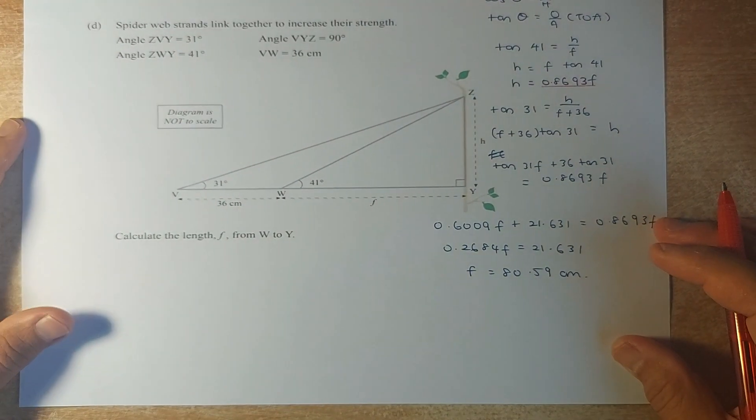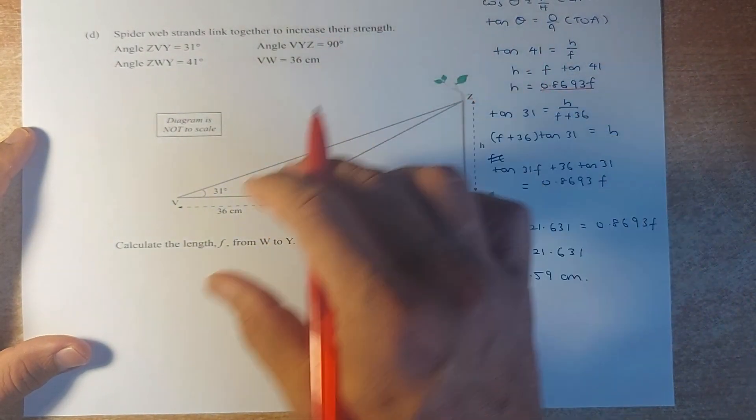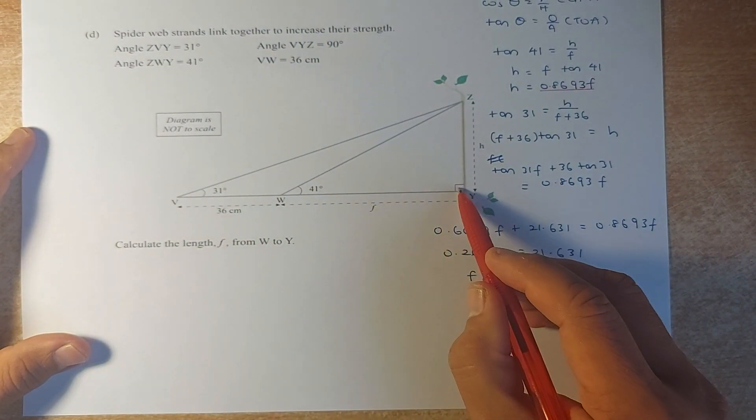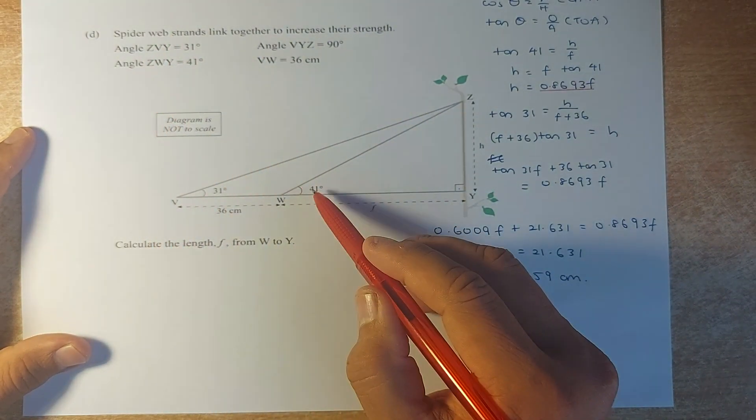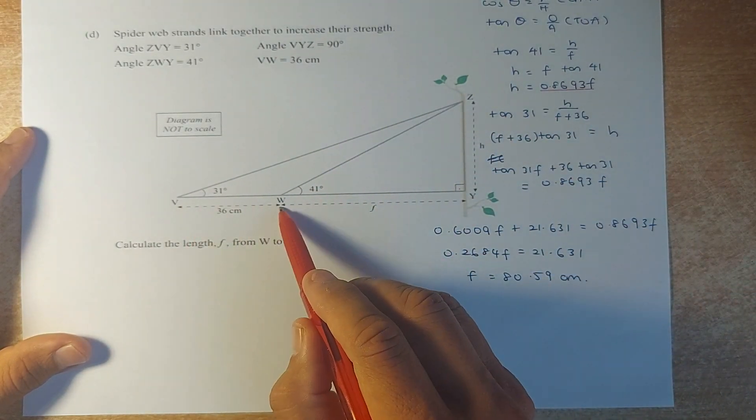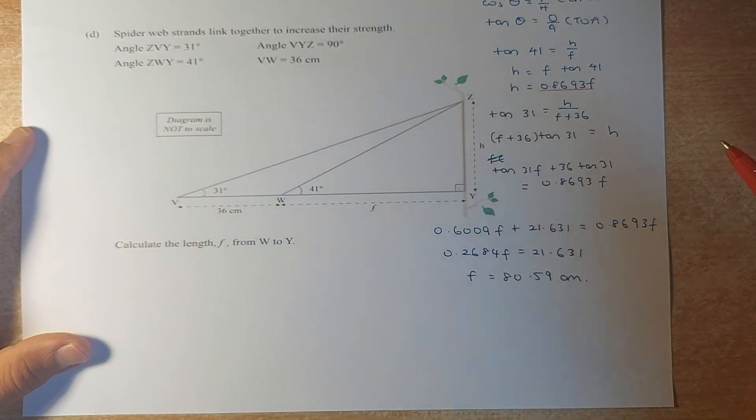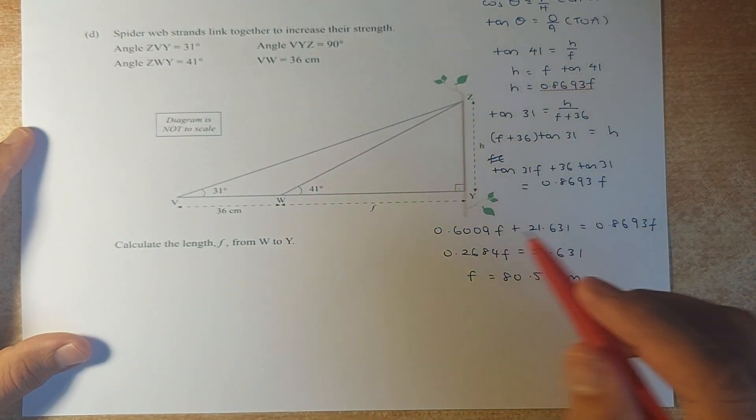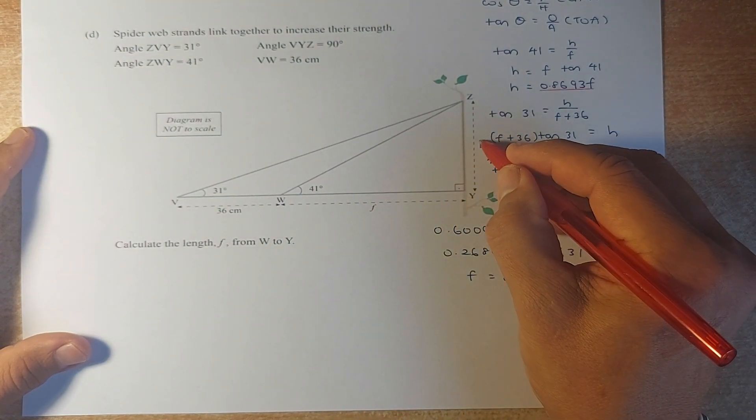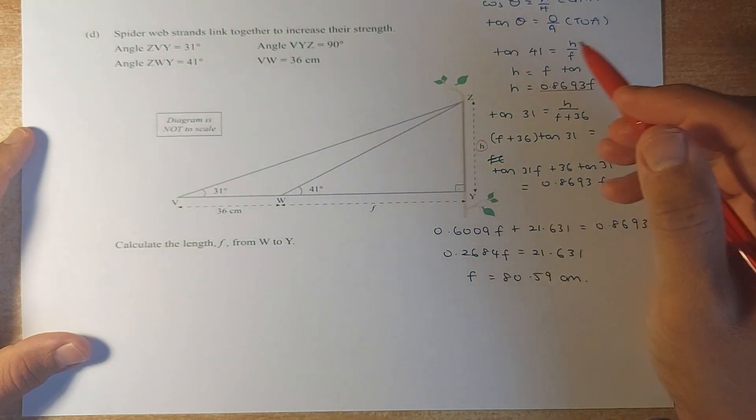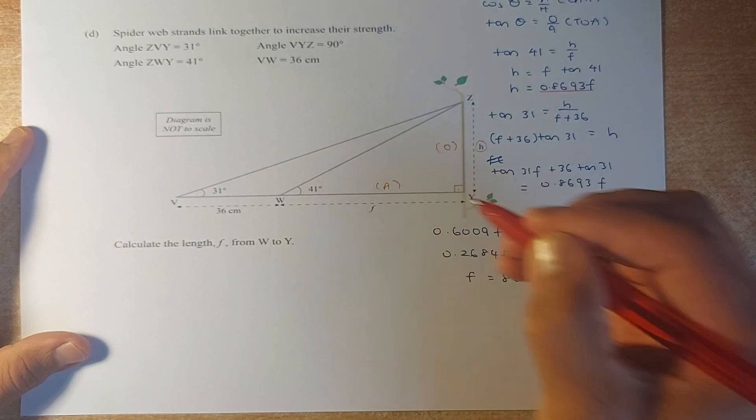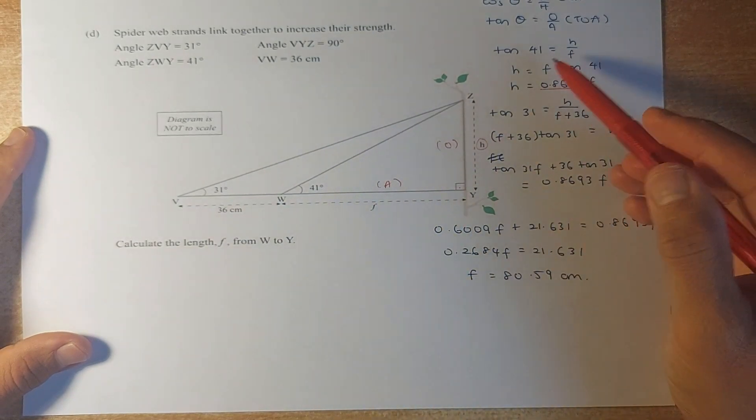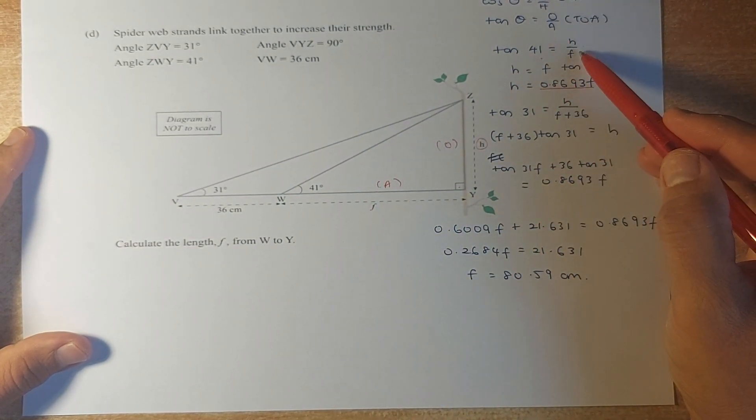The last question is the excellence question. Involves a bit of algebra. These are two right-angle triangles. This angle is 90. Angle ZVY is 31. Angle ZWY is 41. And you know that this is 36, this is F, and this is H. So we look at the smaller triangle, right-angle triangle, and we try to form an equation. First, you look at this right-angle triangle and you want to find H in terms of F. So we have to look, H is the opposite and F is the adjacent. So you have to use tangent 41 equals opposite over adjacent. So your opposite is your H and your adjacent is your F. Now you multiply F on both sides. So the F will cancel out. H equals F tangent 41.